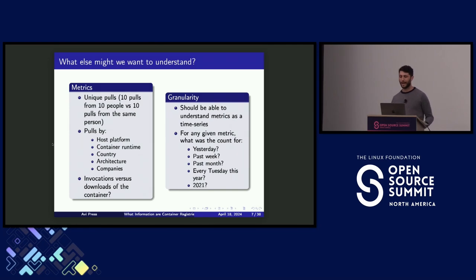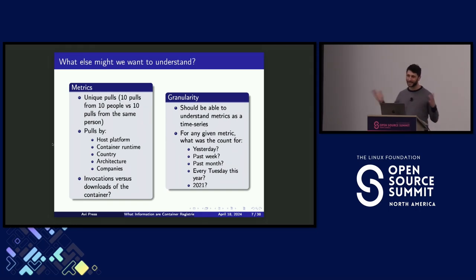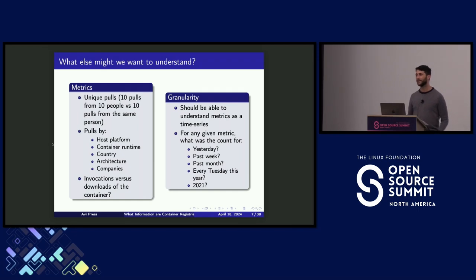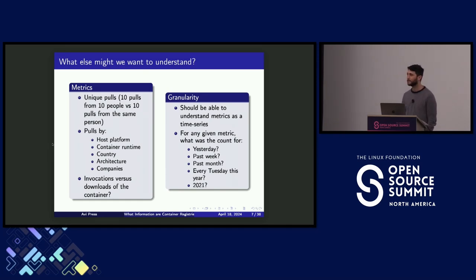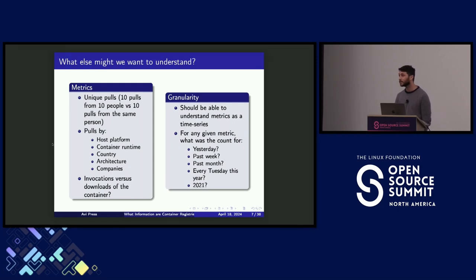But we might want to know a lot more than that. If we get a million pulls on our container, was that from one person, a million people, or ten? It's a very hard number to make any sense of. We also might want to know what container runtime was used — was it Docker, containerd, CRI-O? Where did it come from, what architecture, what host platform? We also might want to know what companies are behind those downloads, especially if you are someone commercializing your open source.